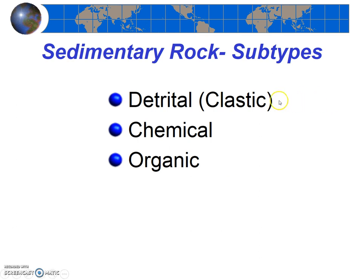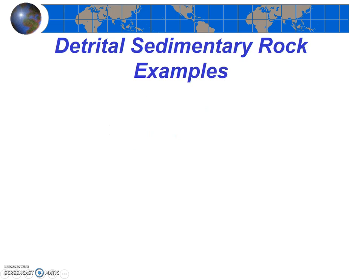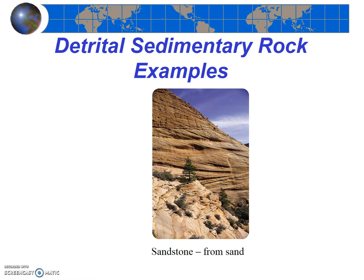Let's look more carefully at the clastic or detrital sedimentary rocks. Detrital rocks are more common than the other two subtypes — more common than chemical or organic rocks — and they form in many different settings, resulting in distinctly different looking rocks. Some examples include sandstone, which is made from cemented sand particles. Where do you suppose sandstone forms? Where does sand accumulate? Sandstone forms in two general environments: beaches and deserts.